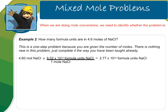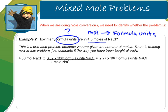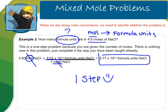Let's look at another one. The problem reads: how many formula units are in 4.6 moles of sodium chloride? I'm starting with moles and going to formula units. Because mole is in the problem, this is just a one-step problem. I started with moles — moles go on the bottom so my units can cancel — and I converted to formula units using 6.02 times 10 to the 23rd formula units. My units cancel, I put this in my calculator, and I have my final answer.